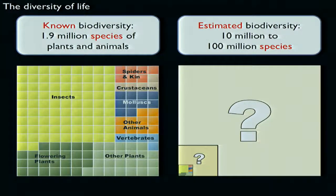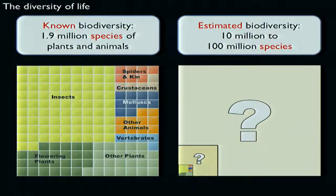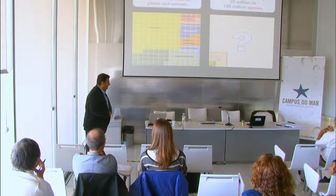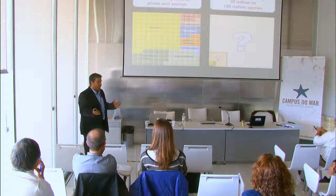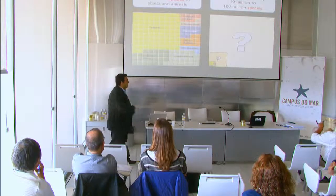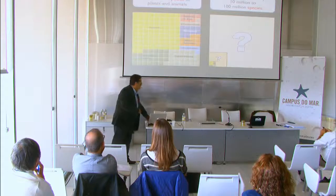We know about roughly 1.9 million species of plants and animals, and I don't even have microbial ones, protists, and similar organisms here because we really don't know much about them. These don't come in a central registry — like a library with all of those. Projects like Catalog of Life, Species 2000, and Encyclopedia of Life are attempts that just started to document biodiversity.